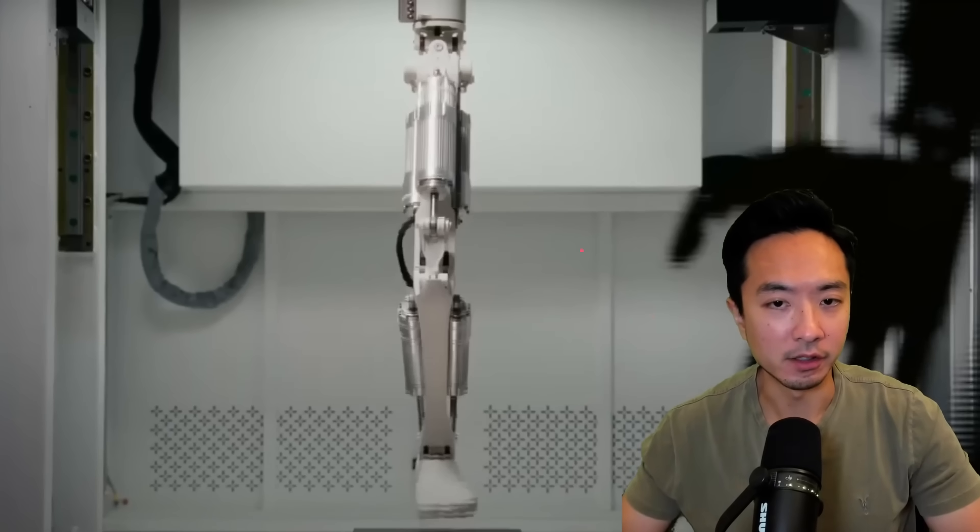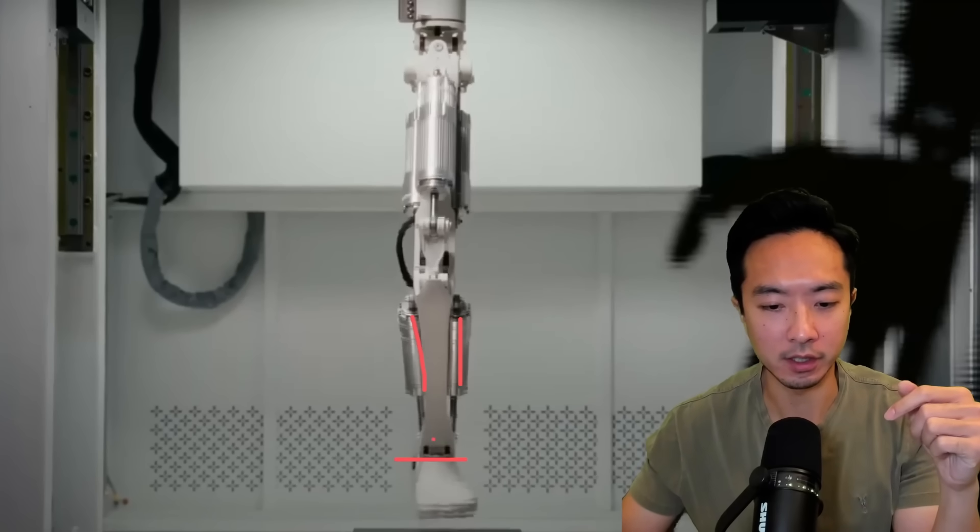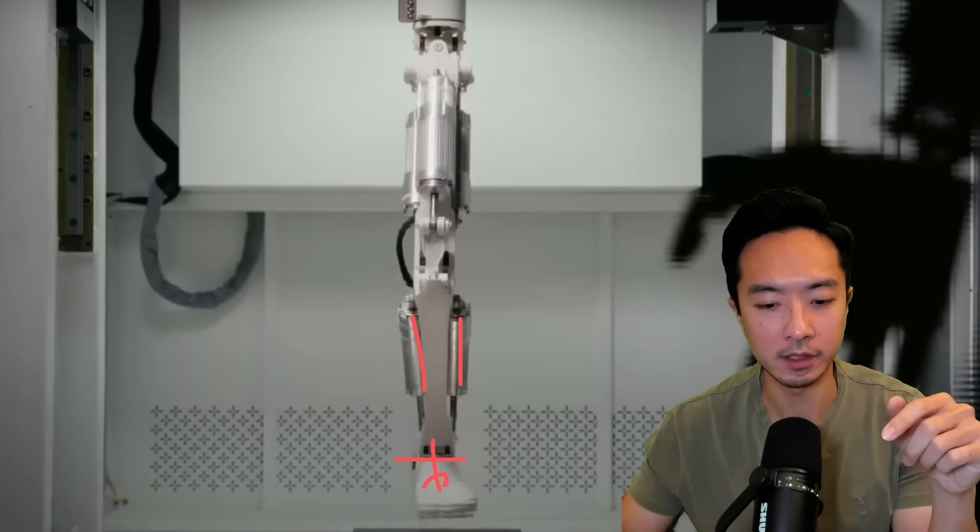Right here, you can see yet another view. You can also see that at the calves, there's also two linear actuators here. And this will create the pitch and roll axis for the foot.